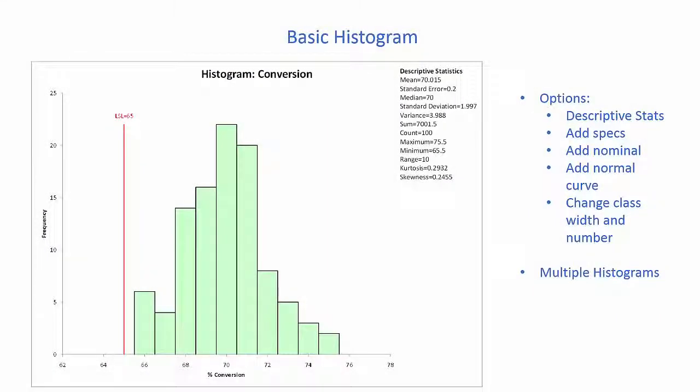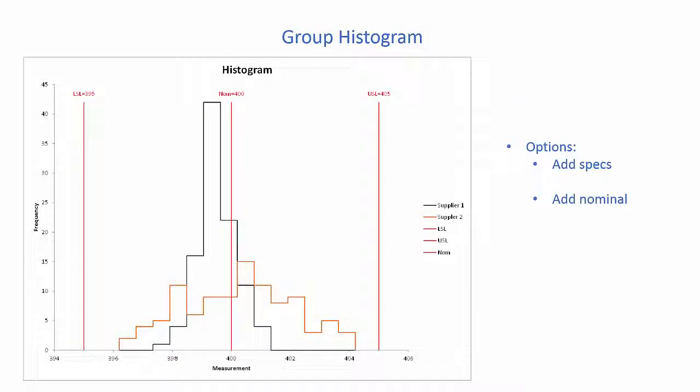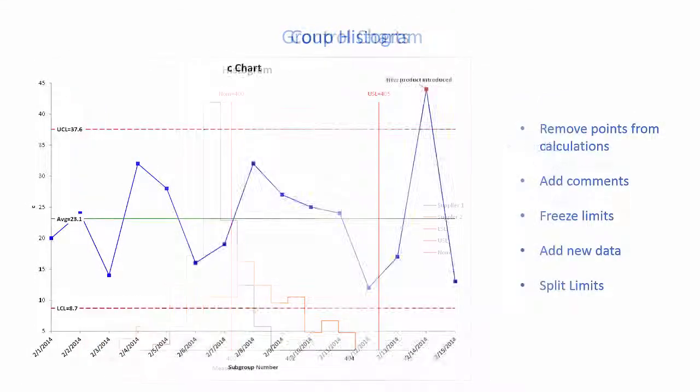The histogram to examine variation in the process, add specifications, the nominal and normal curve, and we also have group histogram to compare multiple processes on the same histogram.